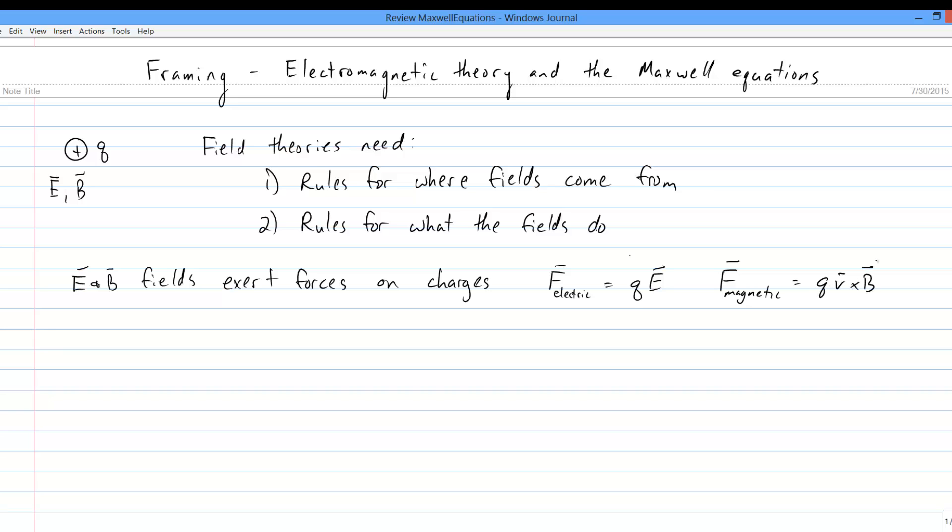Oftentimes, these will be written in one line in what's called the Lorentz force law. With that in hand, all that remains is to figure out the rules that describe the sources of the E and B fields. That's what the Maxwell equations are. They're the laws that tell you about the sources of electric and magnetic fields.